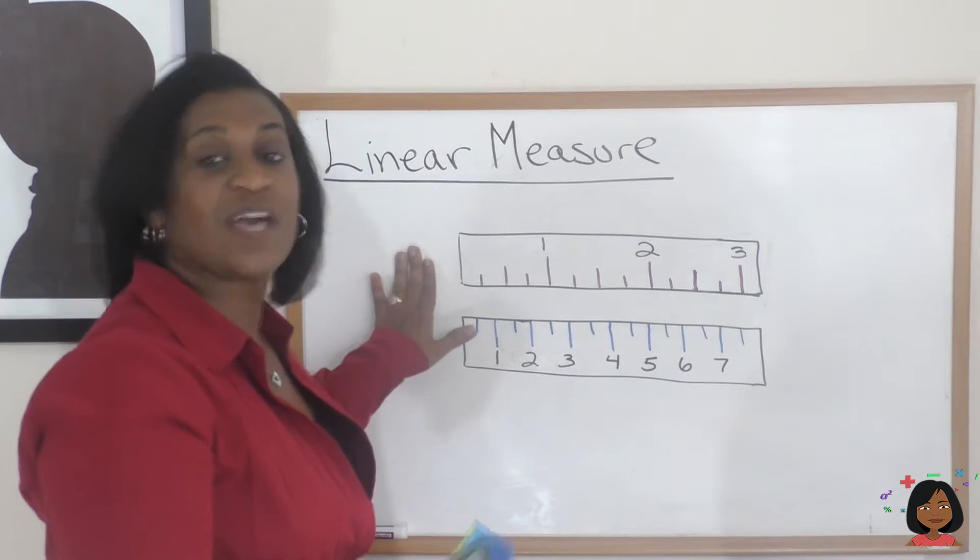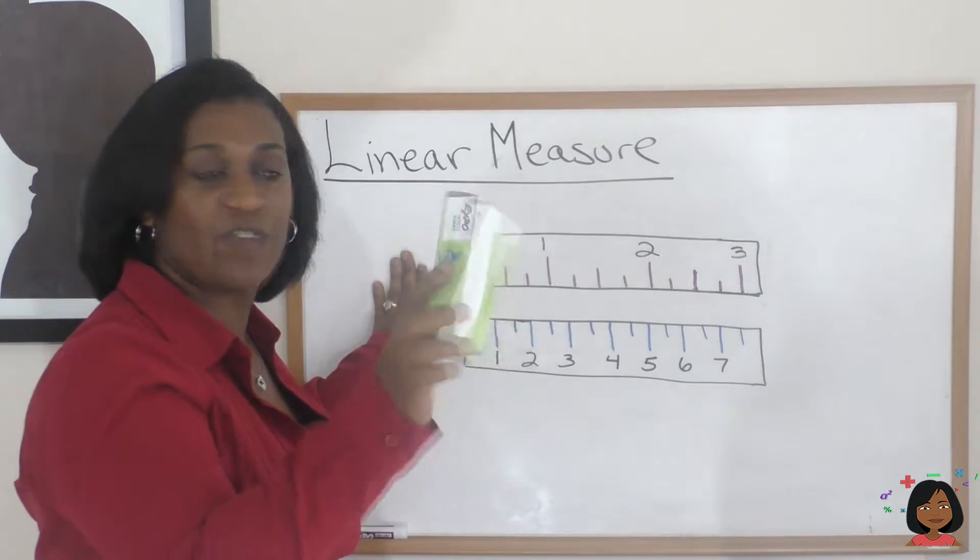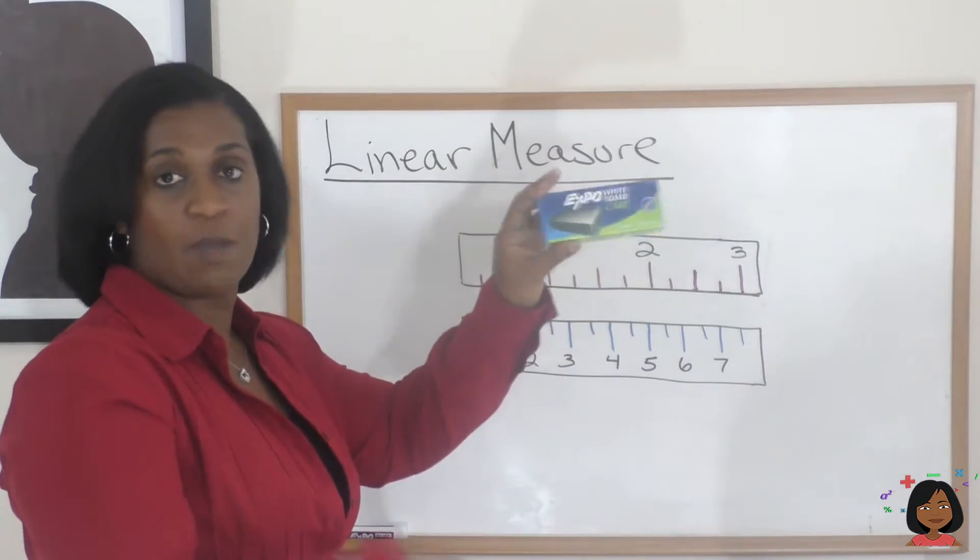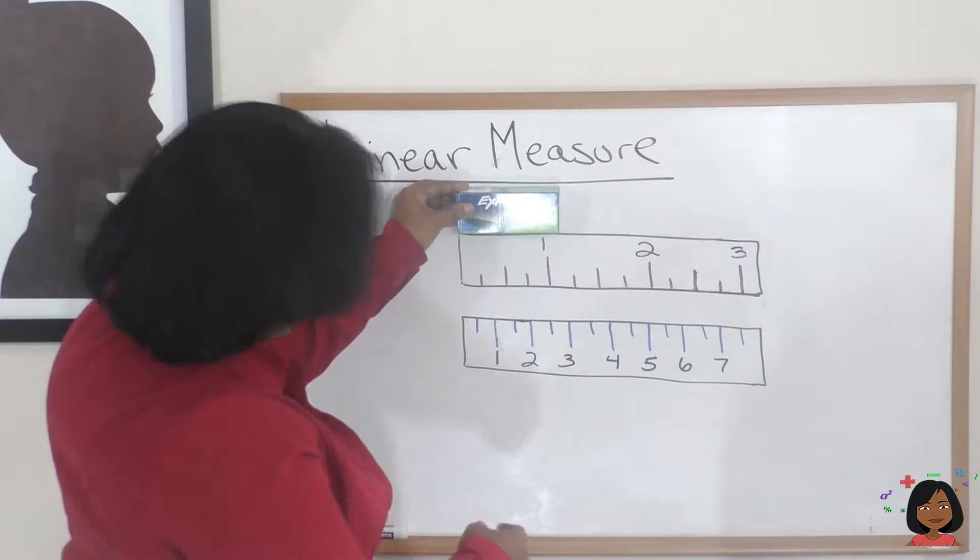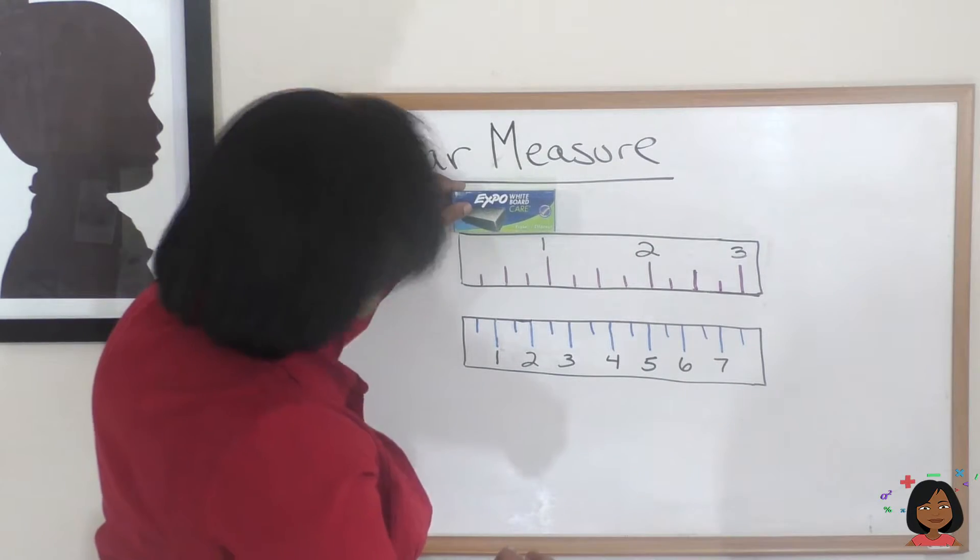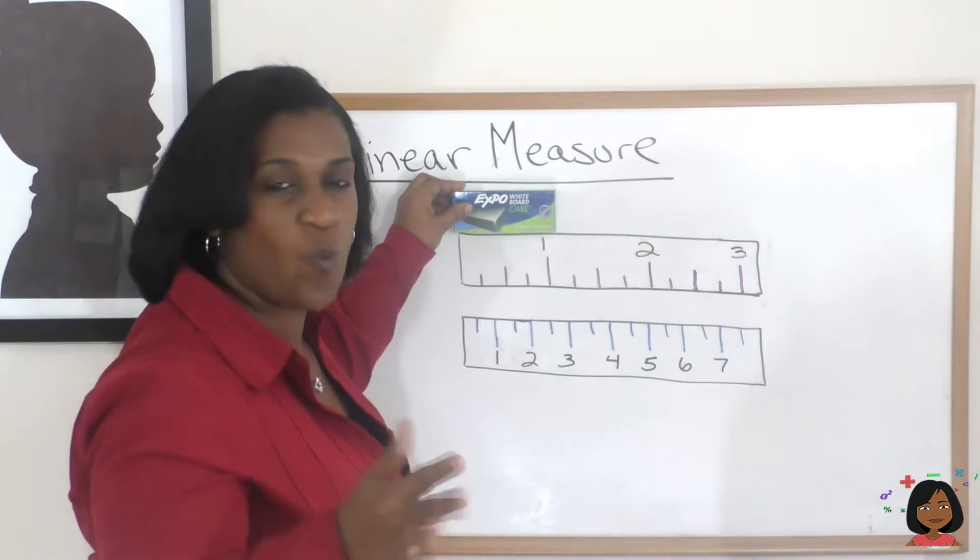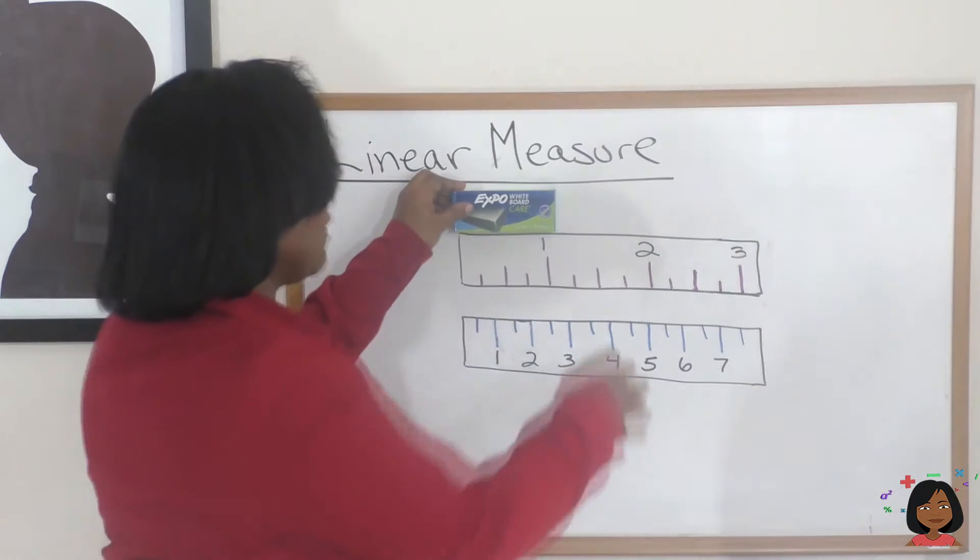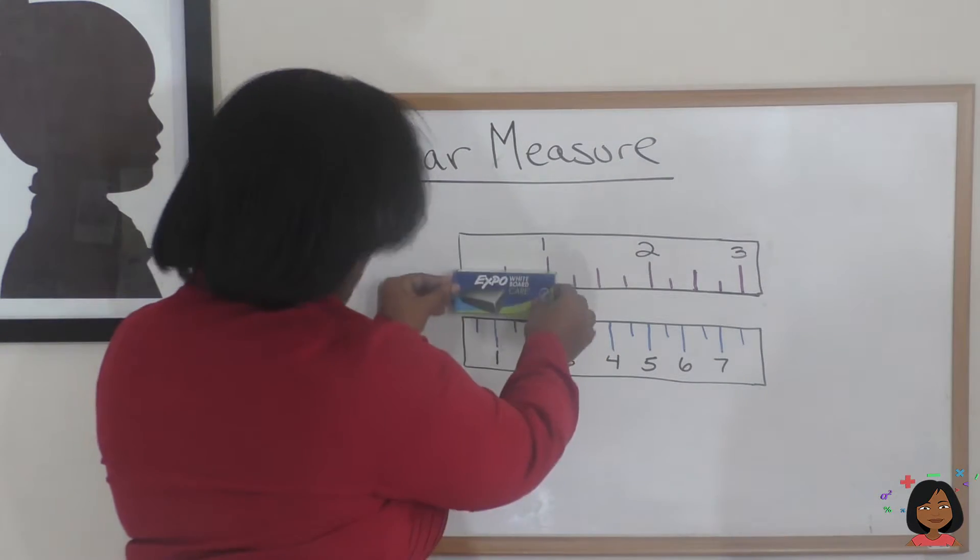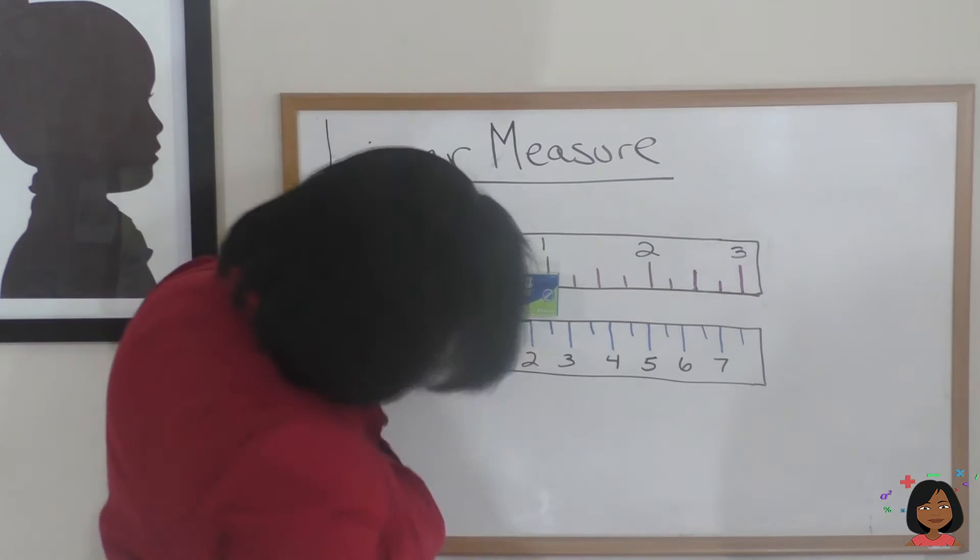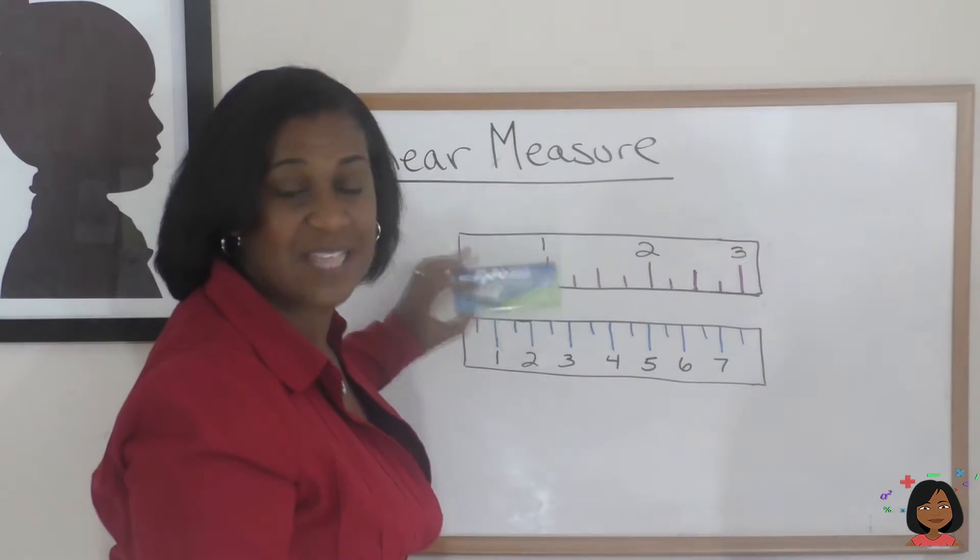So as I said, the US customary system has the inches. If I took this box that my whiteboard eraser came in and measured it on my little handy ruler, I would see that it's just over one inch long. But if I took it down here to the centimeters, it is about two and a half centimeters.